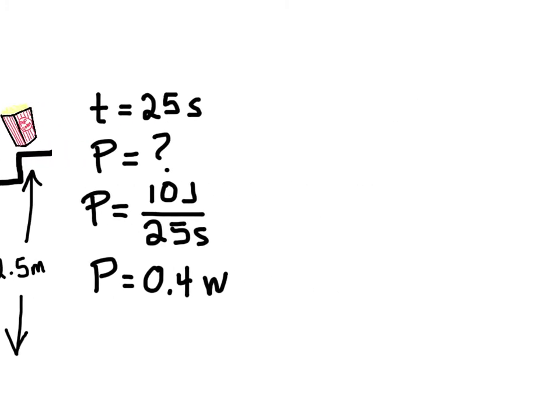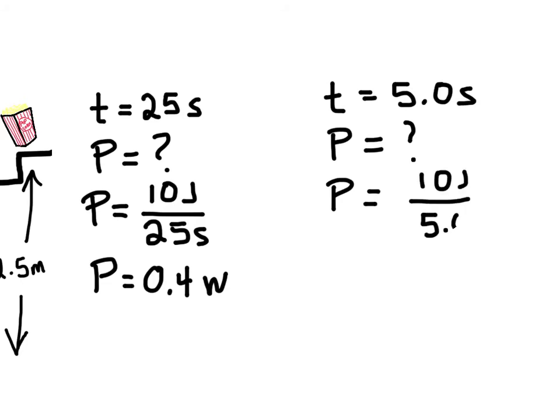Now if you ran up the stairs, and it only took you 5 seconds, what would your power be? Again, power is equal to work, 10 joules, over time, this time 5 seconds. And so your power would be 2 watts.